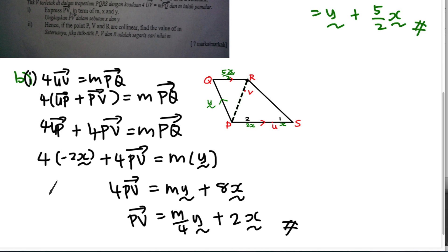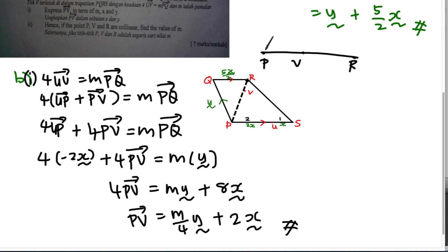Part B(ii) says if points P, V, and R are collinear, find the value of m. Collinear means they lie on the same straight line. When three points are collinear, we introduce a ratio called lambda and write PV = lambda · PR.